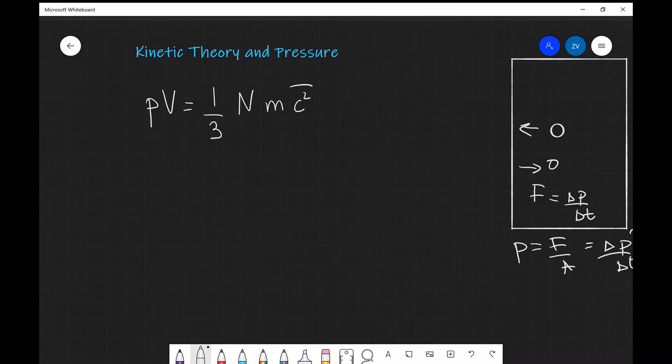What we're going to be looking at today are the kinetic theory and pressure. In particular, we're going to introduce a brand new equation written here: PV equals one-third multiplied by the total number of molecules N, multiplied by the mass of a single molecule m, and multiplied by the mean square speed c̄².